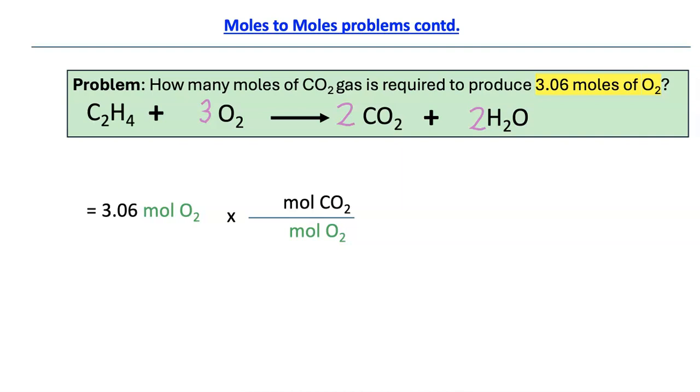And then, the top would be the one you have to find which is moles of CO₂. And now, you're going to put the mole ratios. For CO₂, it's 2 and for O₂, it's 3. And now, you're going to cancel out moles and moles.